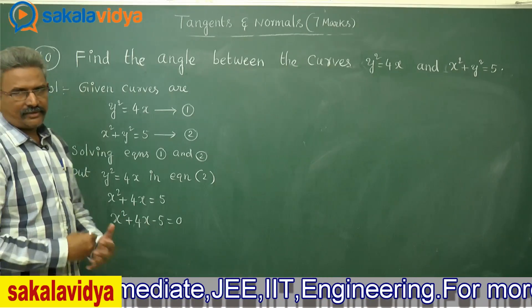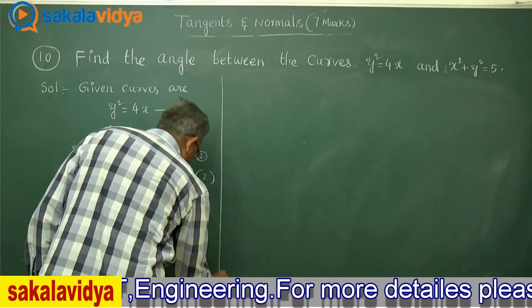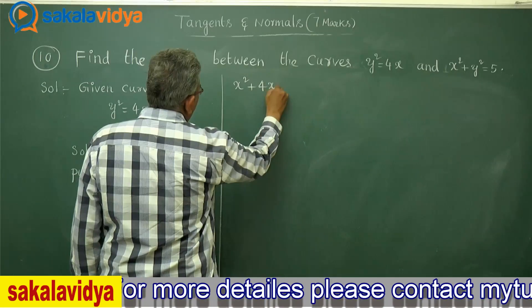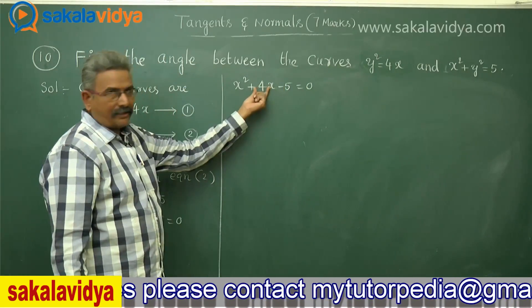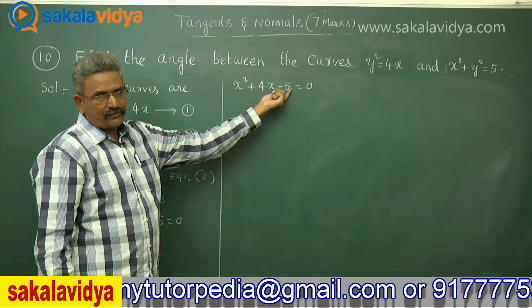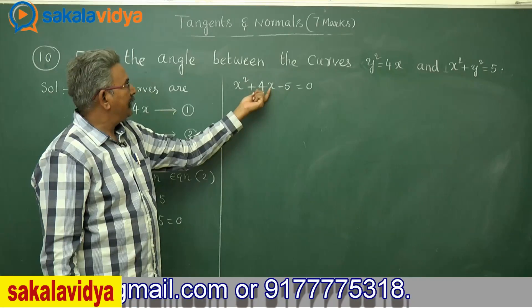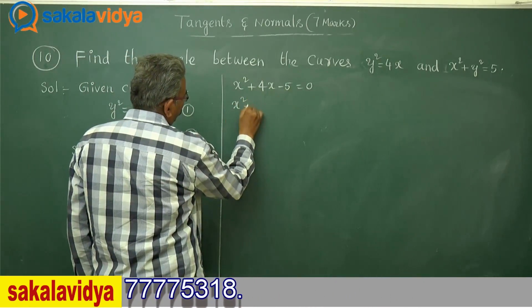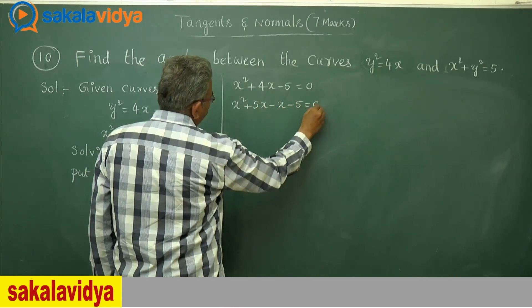By using the factorization method, x² + 4x − 5 = 0. We need to split the middle term. The factors of −5 are +5 and −1, so 4x can be split as 5x − x. That means x² + 5x − x − 5 = 0.